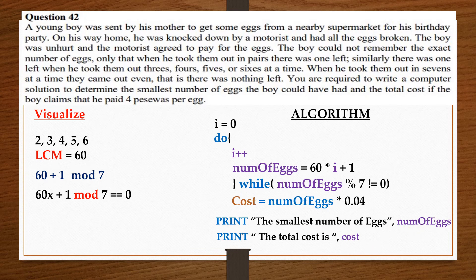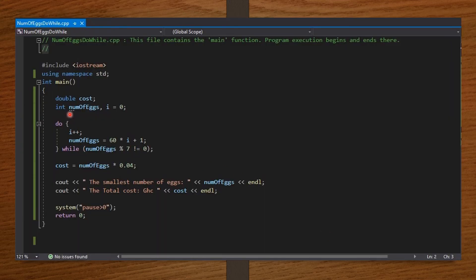Alright friends, so we are through with the algorithm. Let's take a look at our code in C++. So, in the int main function, I declare the doubles and then my integers. And I set i to be 0. Then I say the do-while loop is going to compute for the number of eggs. Then I compute for the cost. And after that, I print out the number of eggs and then the cost in Ghana cedis. Then I end my code with system pause and then return 0.